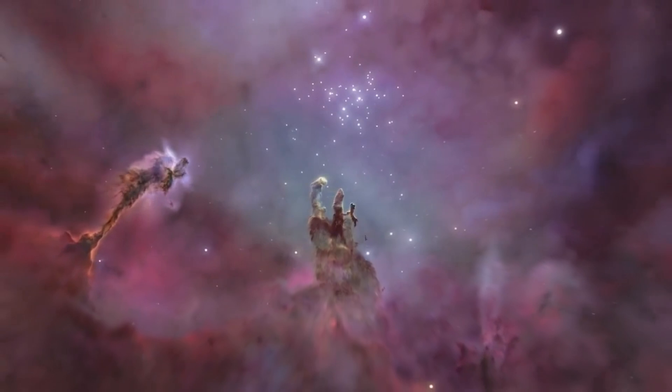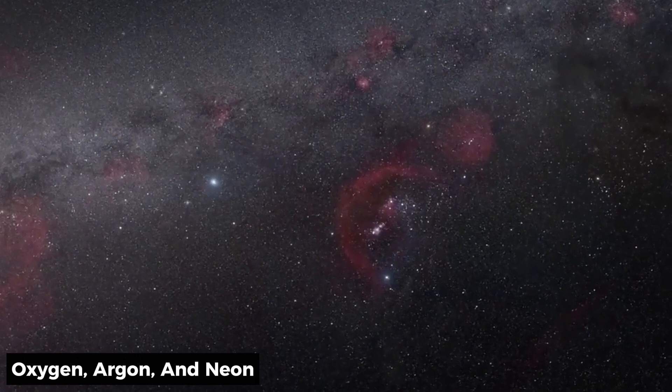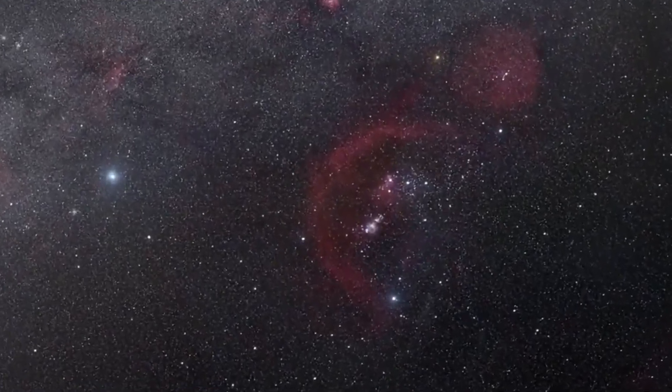The pink color tells us what it's made of and how it's shining. They shine due to a mix of heavy elements like oxygen, argon, and neon. There's also some dust mixed in there.